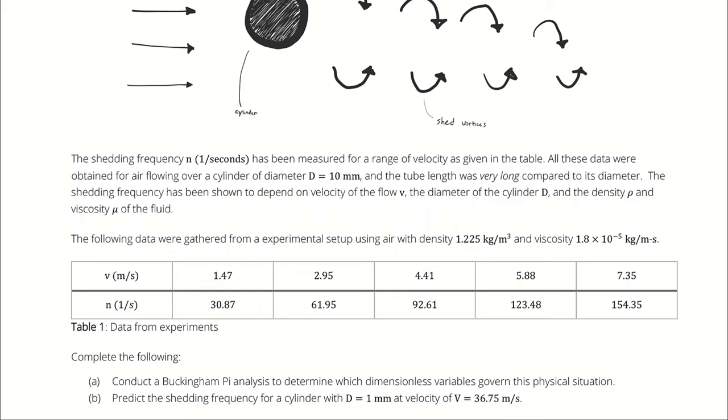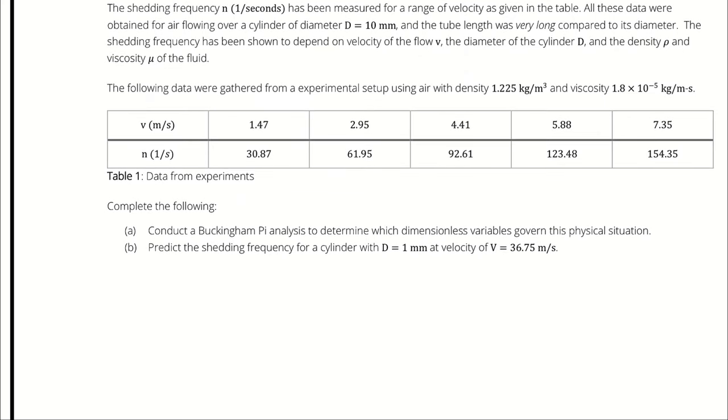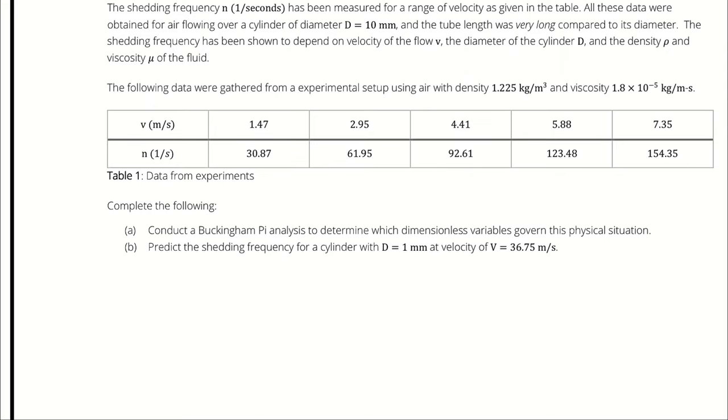The shedding frequency has been shown to depend on velocity of the flow, the diameter of the cylinder, the density and viscosity of the fluid. The following data were gathered from an experimental setup using air with density 1.225 kg/m³ and viscosity 1.8 × 10⁻⁵ kg/(m·s). The first thing I want us to do is use a Buckingham Pi analysis to determine which dimensionless variables govern the physical situation, and then predict the shedding frequency for a cylinder of smaller diameter with velocity of 36.75 m/s.